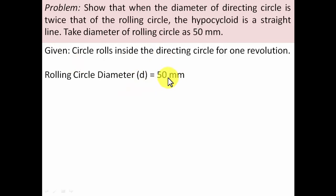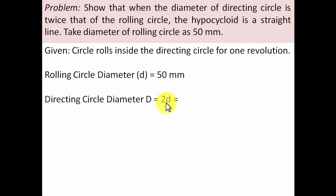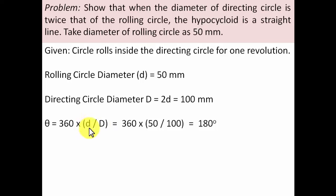The rolling circle diameter is given as 50 millimeters, and the condition states that the diameter of the directing circle is twice that of the rolling circle. So the directing circle diameter works out as 2d, that is 100 millimeters. When this circle rolls from its initial point and completes one revolution, it subtends an angle at the center computed by: θ = 360 × d / D. Substituting values gives 180 degrees as the angle subtended at the center of the directing circle.